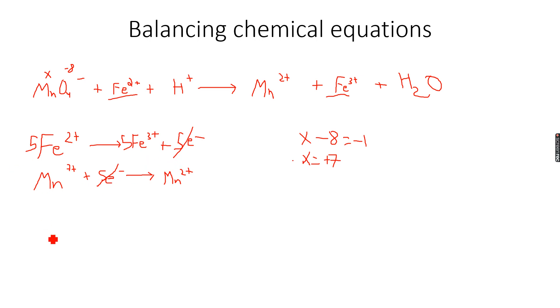So when we add these two we see that there are 5 Fe2+ ions, there are 5 Fe2+ ions and therefore this will become 5 and this will also become 5. So both these become 5.